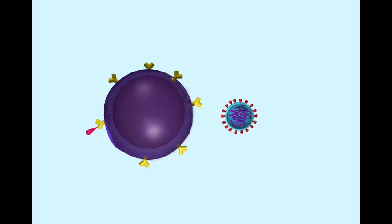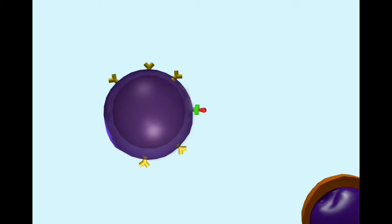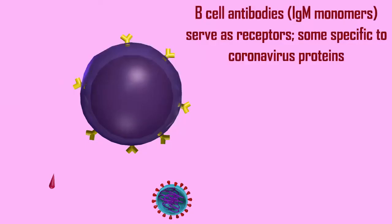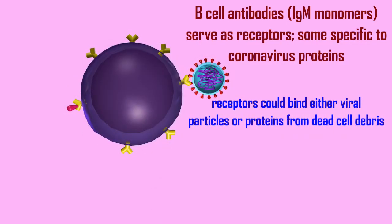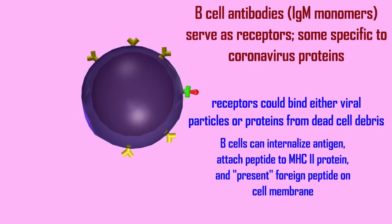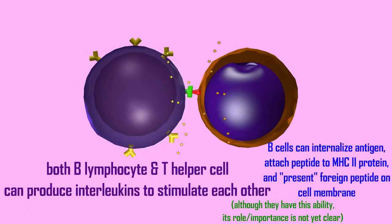Although not as well understood, B lymphocytes are also capable of acting as antigen-presenting cells. They could conceivably bind either coronavirus particles or protein from coronavirus — perhaps originating in dead cells in the debris — and not only could they bind this to the IgM antibody which serves as a surface receptor, they could then internalize the foreign molecule, break it into peptides, attach a foreign peptide to an MHC2 protein, and then move that to the cell surface where they could present it to T helper cells.